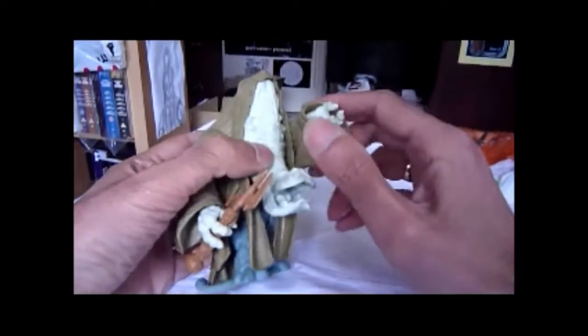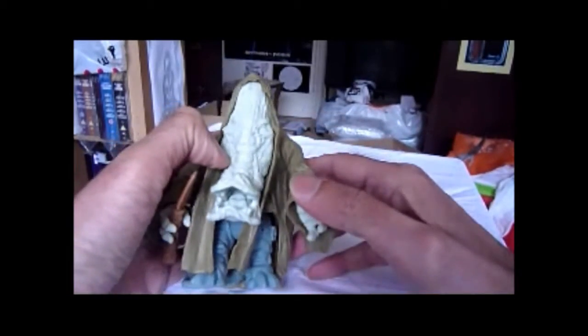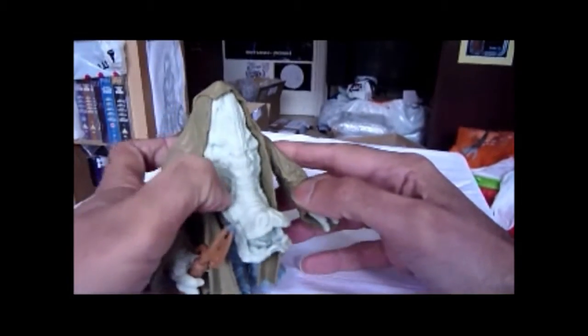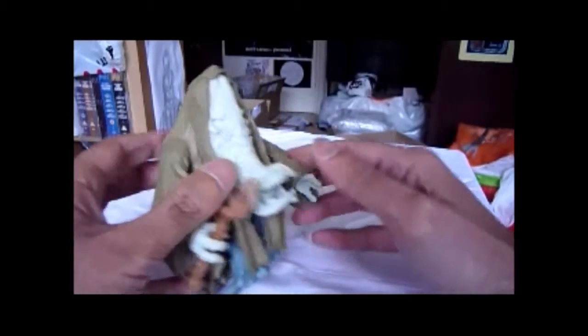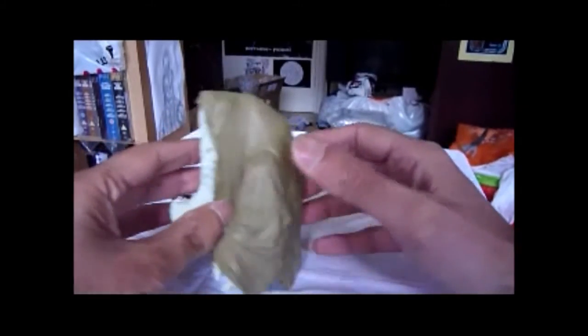He comes with this sort of axe thing. He's one of Jabba's, I think he's Jabba's chief of security. And you see this guy in Return of the Jedi. He's a great figure.